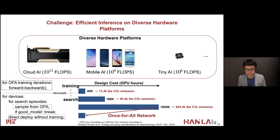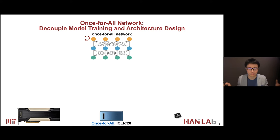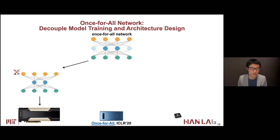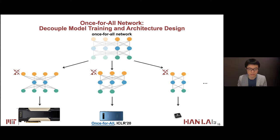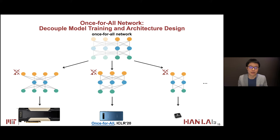Therefore, we cut the search cost when handling many devices by a large order of magnitude. Here is how the once-for-all network works: say you have three different deployment scenarios — cloud AI, mobile AI, and tiny AI. For cloud AI, you pick a larger subnetwork from the once-for-all network. For mobile AI, a middle-sized network. For tiny AI, an even smaller subnetwork. All three subnetworks are not retrained — their weights are directly grabbed from the once-for-all network. We just train only once and amortize the training cost across many deployment scenarios and many hardware devices.